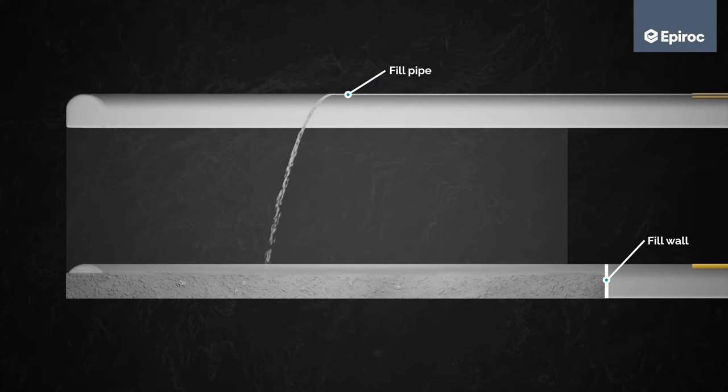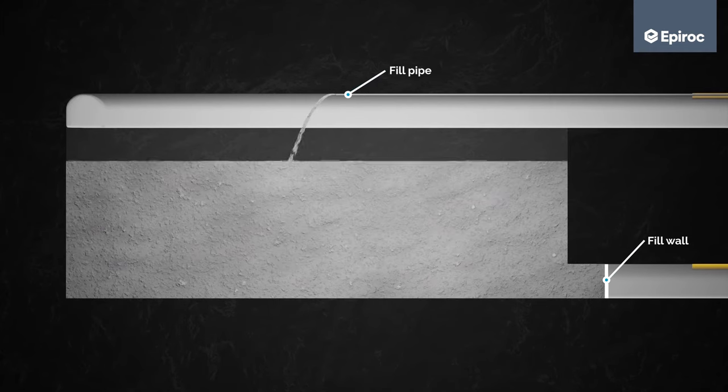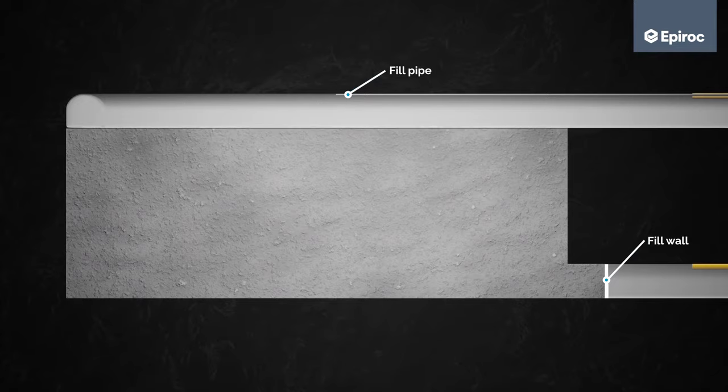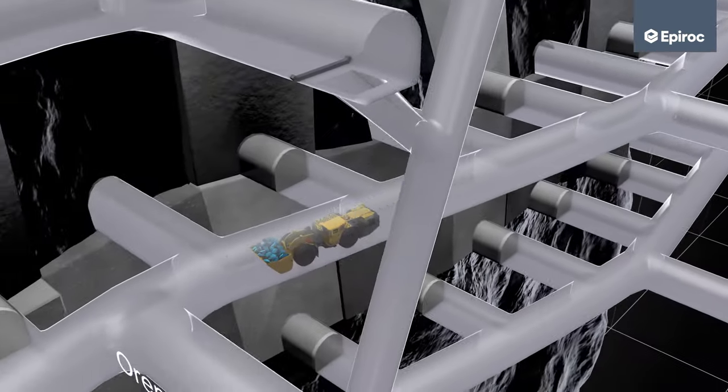One of the advantages with backfilling is the possibility to reuse waste for backfill material, such as tailing sand from the processing plant. The excavation sequence continues according to plan.